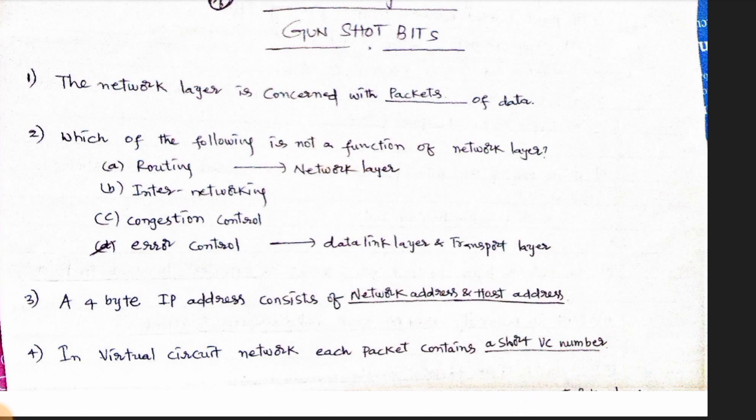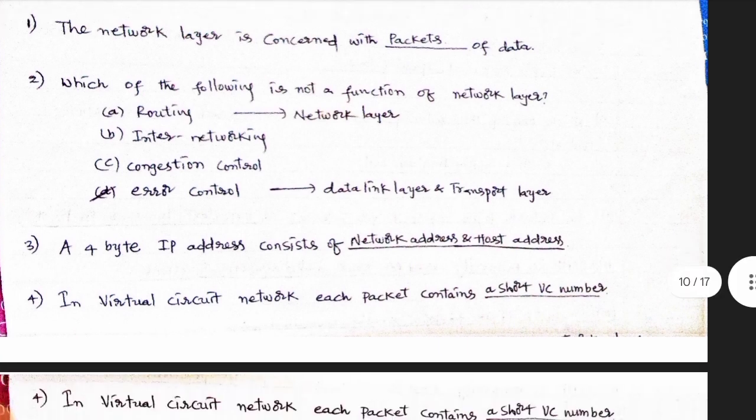First question: The network layer is concerned with packets of data. Which of the following is not a function of the network layer? Routing is a network layer function. Data link and transport layer — choose: 4-byte IP address, network address and host address. This is very important.